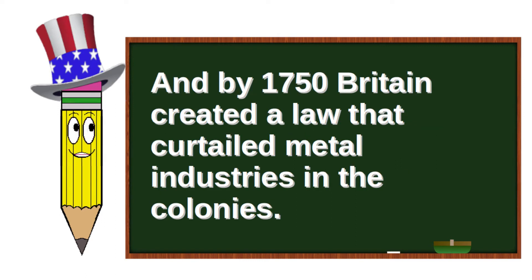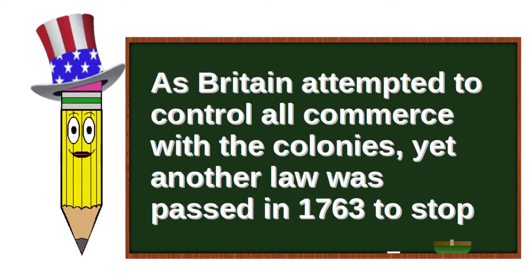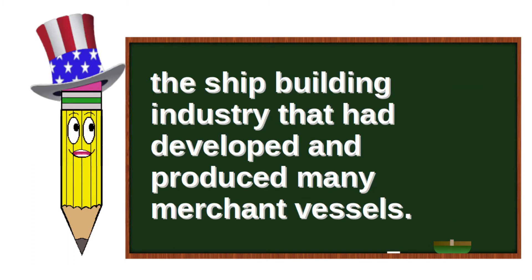By 1750, Britain created a law that curtailed metal industries in the colonies. As Britain attempted to control all commerce with the colonies, yet another law was passed in 1763 to stop the shipbuilding industry that had developed and produced many merchant vessels.